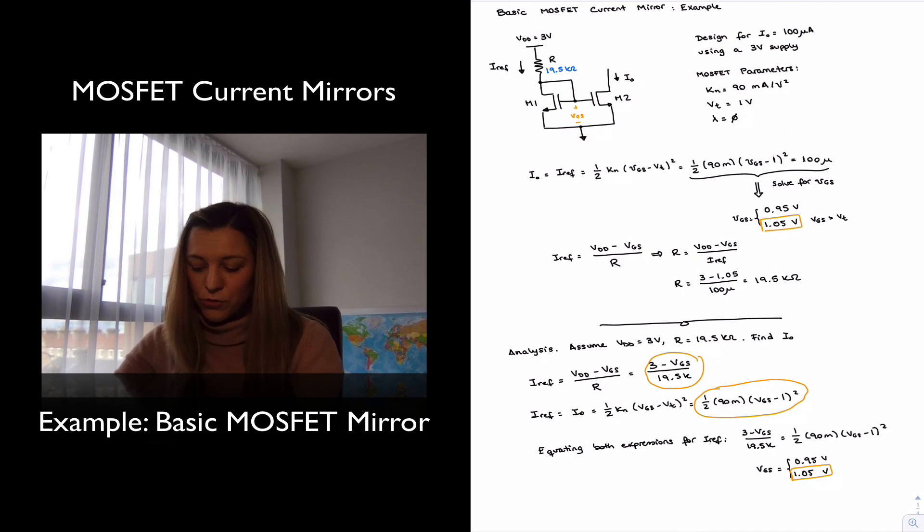And from here I could use either one of those two expressions for IREF to calculate IREF. So for example, I could say IREF is equal to 3 minus 1.05 divided by 19.5 K, which will give me 100 microamps.